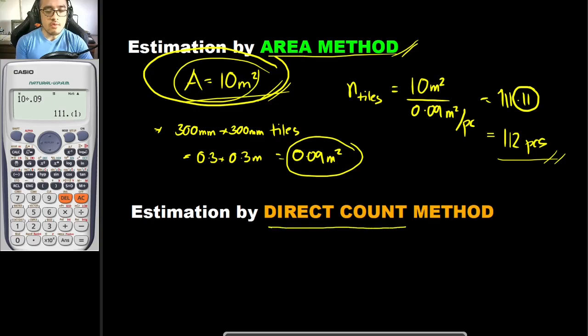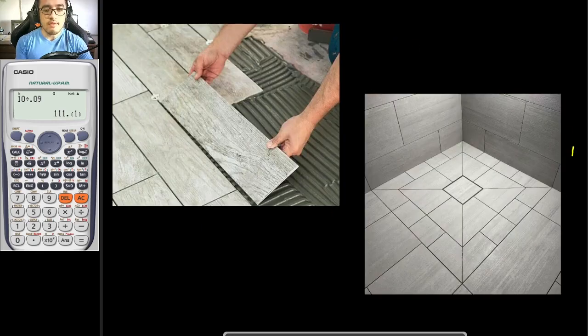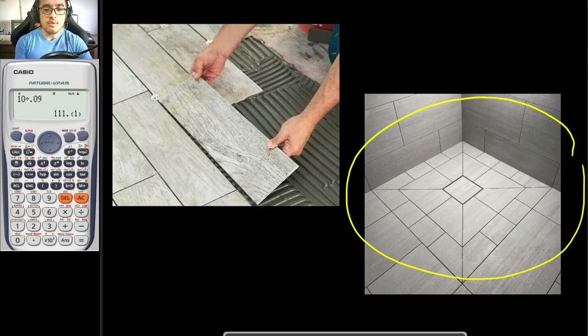For direct count method, this is quite self-explanatory — you simply count directly. For example, you have this layout here. What you would be doing is count your tiles.